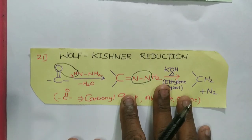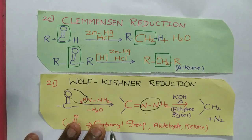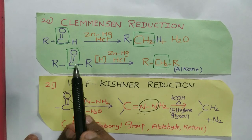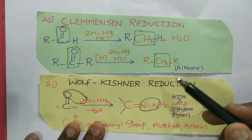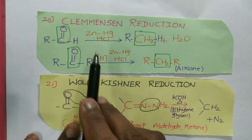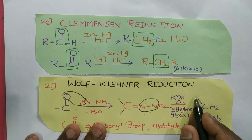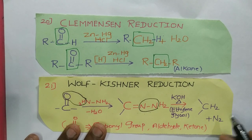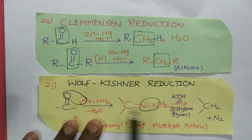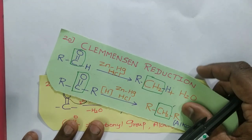To summarize the comparison: both Clemmensen reduction and Wolf-Kishner reduction convert C=O into CH₂. The only difference is the reducing agent. Clemmensen uses zinc amalgam and HCl; Wolf-Kishner uses hydrazine with KOH in a high-boiling solvent. In Wolf-Kishner, the intermediate hydrazone is formed first, then heated with KOH to eliminate nitrogen and give CH₂. Both are reduction reactions with the same ultimate aim — converting carbonyl to CH₂.